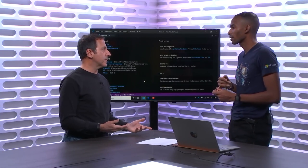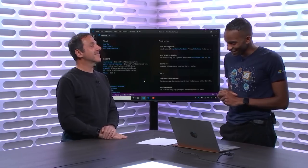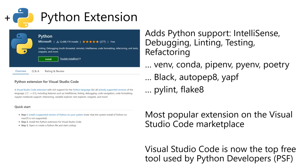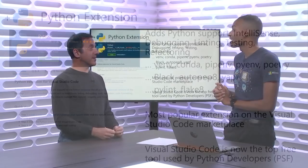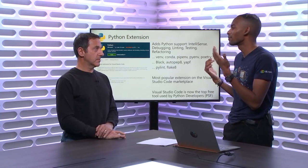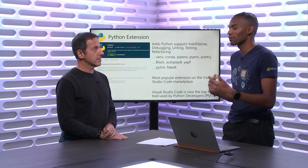That'll be another episode recorded after this one — showing people the behind the scenes of how it works here in the studio. The Python extension offers a lot of great jam-packed features: IntelliSense, debugging, testing, support for virtual environment packages like venv and Conda, formatters like Black and AutoPep8, and popular linters like PyLint. A fun fact: the Python extension is the most popular extension in the VS Code marketplace, and Visual Studio Code is now the top free tool for Python developers.